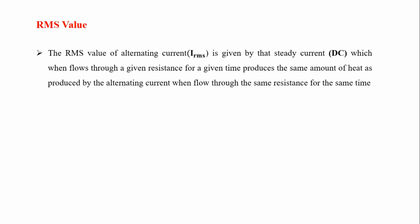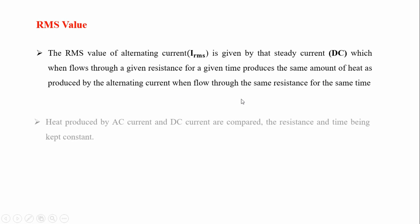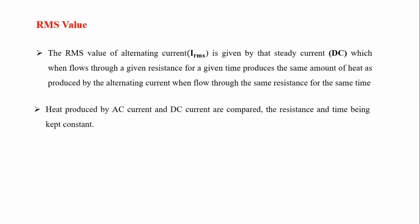So what is RMS value? By definition, the RMS value of alternating current, that is I_RMS, is defined as the DC current which, when it flows through a given resistance for a given time, produces the same amount of heat as produced by the alternating current when flowing through the same resistance for the same time. The resistance and time being kept constant.